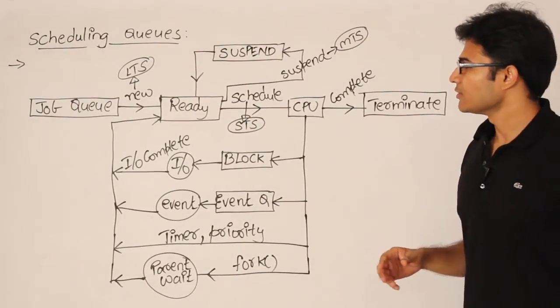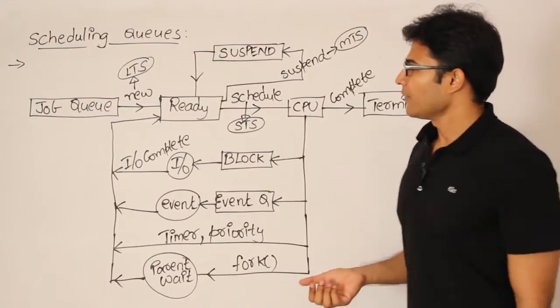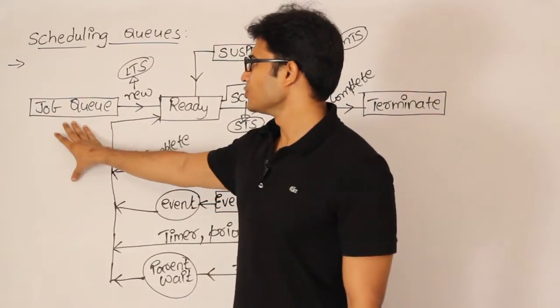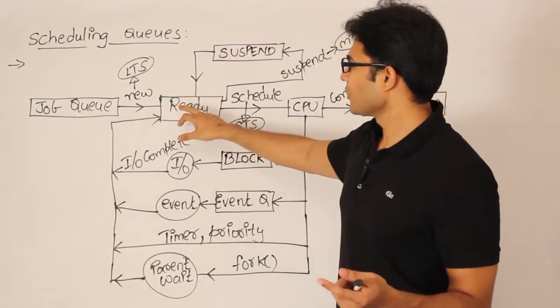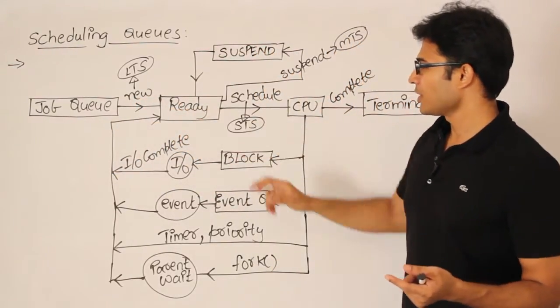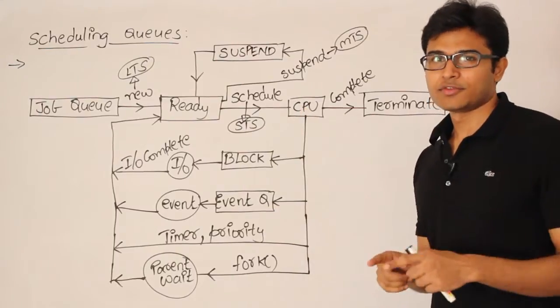And let's see how this diagram works. Now initially, jobs will be in the job queue, which means before they get created. Once they get created, they are going to be in the ready queue. So this is going to contain all the jobs which are ready.